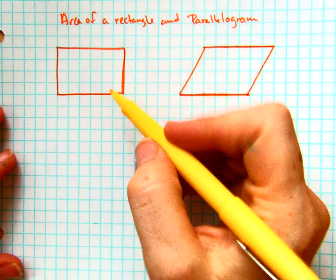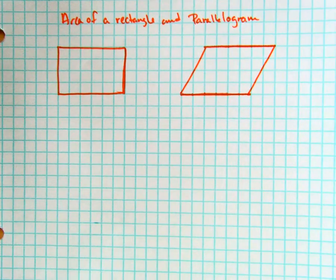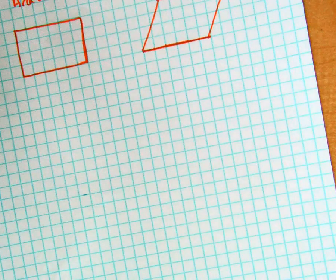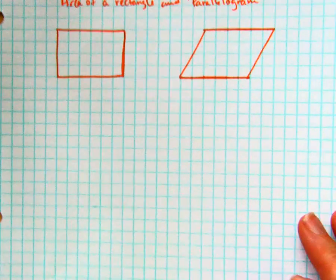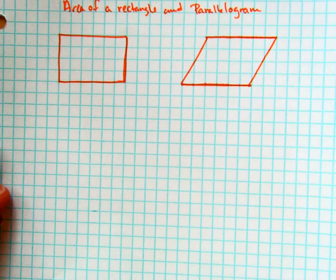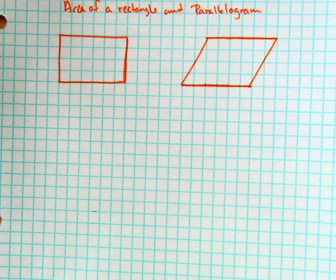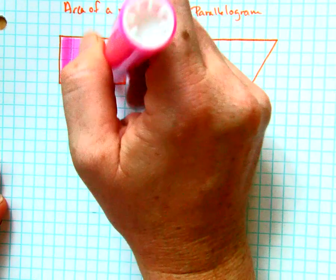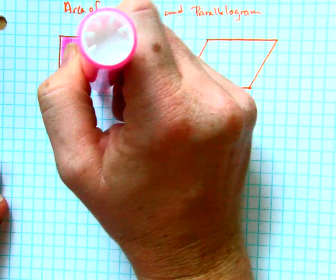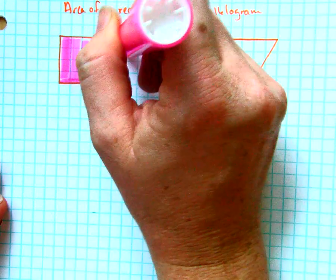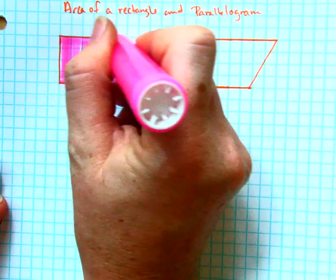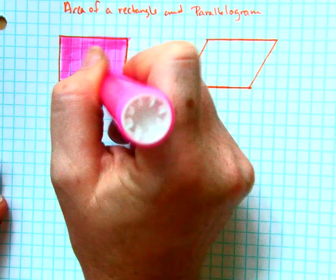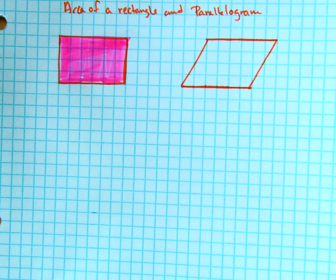If we consider this rectangle, we want to remember that area is all of the square area inside the rectangle. So we're talking all of this space in here. When it's on a grid like this, it's actually really easy to see the area because we can actually just count blocks.